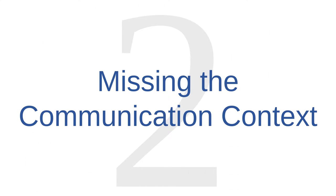Interpersonal issue number two is missing the communication context. The physical context of communication is very important to getting a message across. Facial expressions, gestures, and other body language can have a profound influence on the meaning of any given sentence. So can your tone of voice.